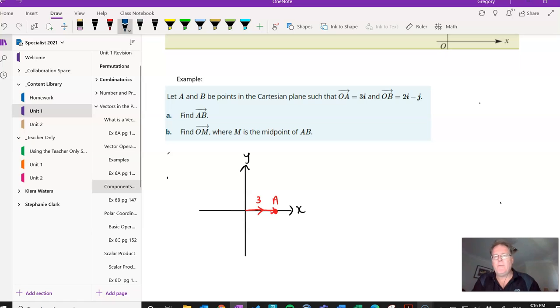And then if I look at OB, it's 2I subtract J, so come out 2 units, down 1 unit, there'll be my B there. So that will be B, and that's in the direction.